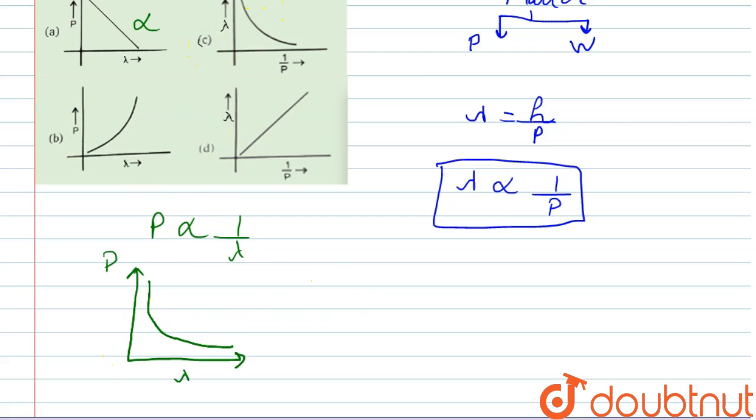In option number c, we have to plot the graph between lambda and 1 by p. Now we know that lambda is directly proportional to 1 by p.